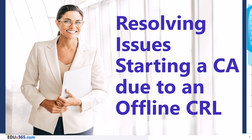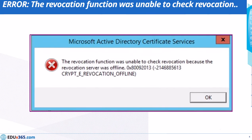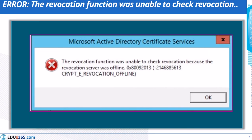So, while working on a project, I came across a scenario where I had to troubleshoot an error which was appearing in the event log as: the revocation function was unable to check revocation because the revocation server was offline.